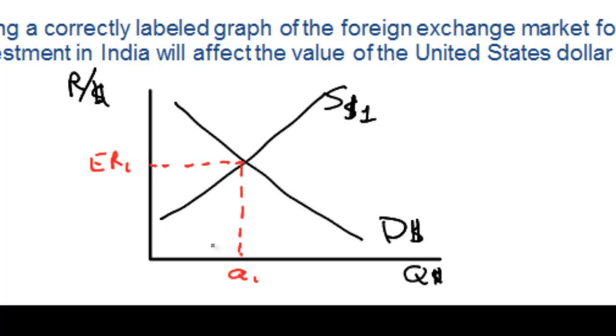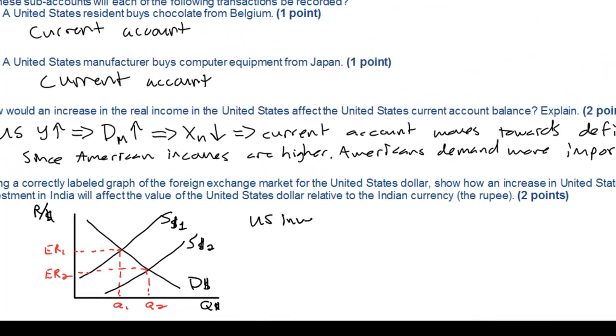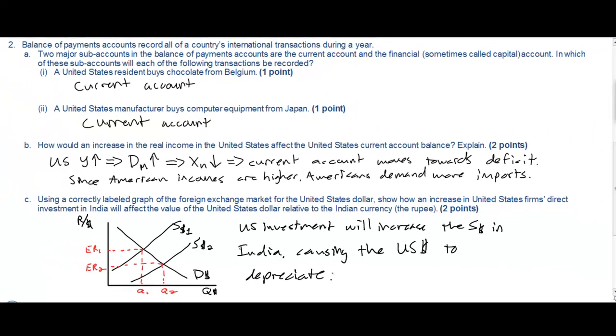Now if American firms invest more in the Indian economy, this will lead to an inflow of US dollars into the Indian economy. The US dollar becomes less scarce and therefore the exchange rate falls. So US investment in India will increase the supply of US dollars causing the exchange rate to fall. The US dollar essentially becomes weaker due to the increased investment in the Indian economy.